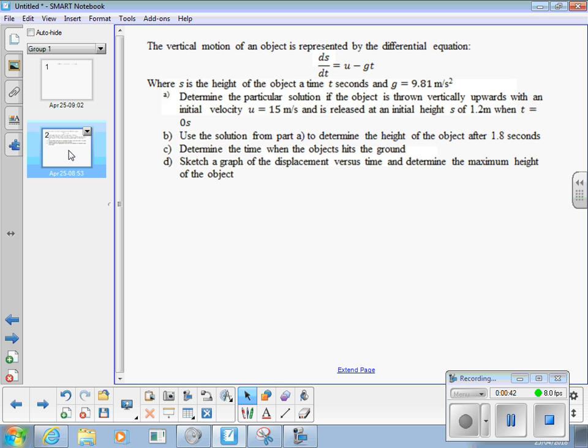We're going to look at the vertical motion of an object, one that's represented by a differential equation: ds/dt is equal to u minus gt. Where s is the height of the object at time t seconds, and g, the acceleration due to gravity, is 9.81 meters per second squared.